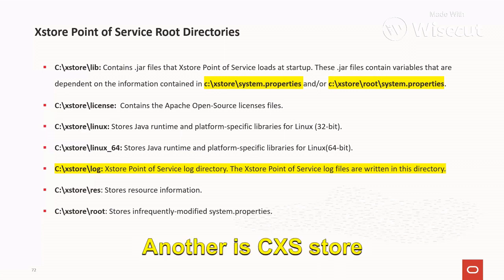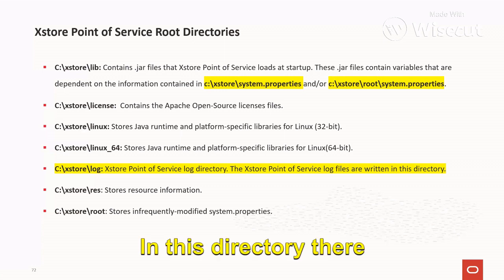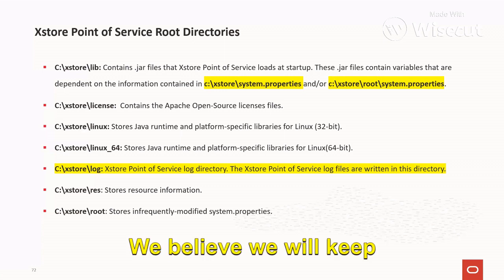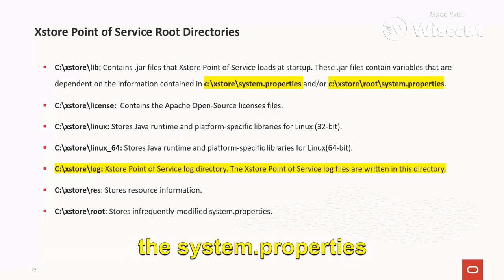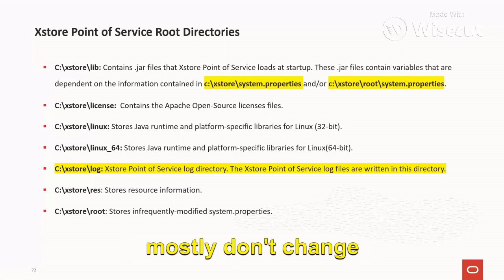Another is the C:\AccessStore\root directory. In this directory there will be the system.properties file. Usually we keep the system.properties that we mostly don't change over a longer period of time.